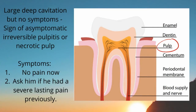If we have a large deep cavity reaching the pulp but the patient is not experiencing any pain — just noticing a hole in their tooth — the diagnosis will be necrotic pulp, because the pulp is dead, meaning there is no more pain. If you ask whether they had pain previously, they will say yes, but then it disappeared. These are all signs of necrotic pulp.